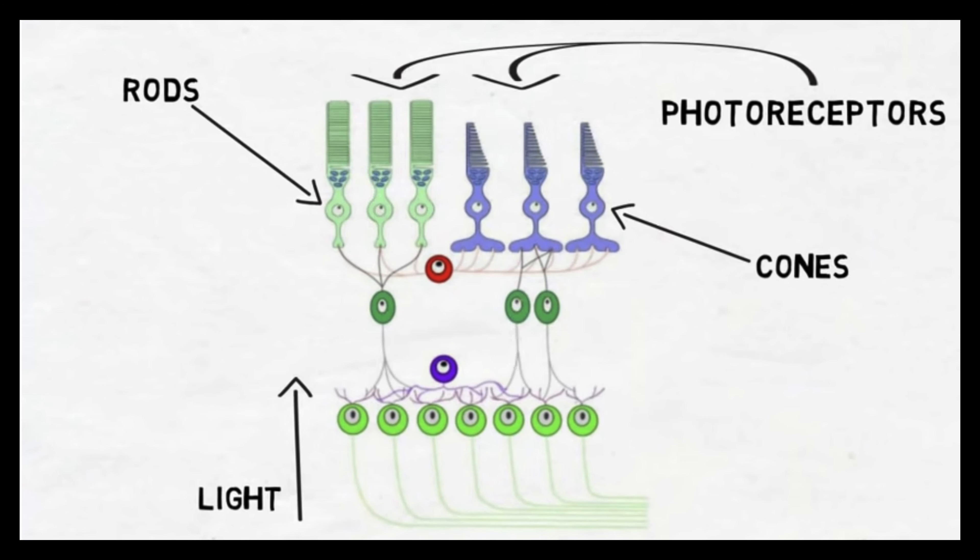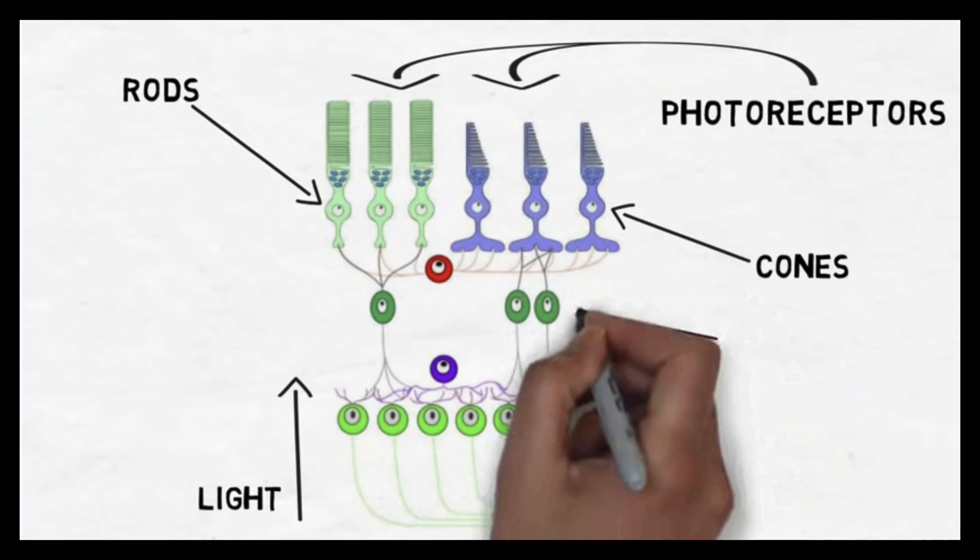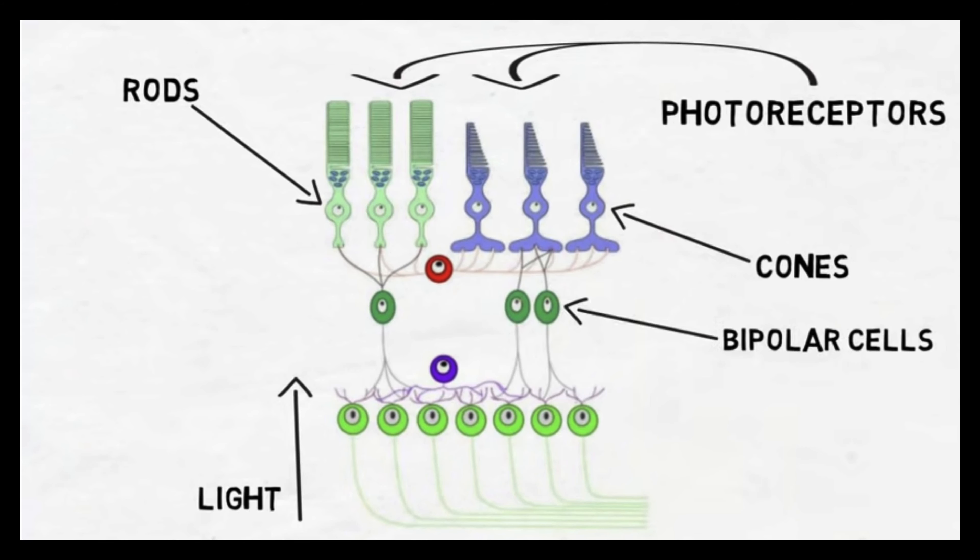When light hits photoreceptors, it interacts with a molecule called photopigment, which begins a chain of events that serves to propagate the visual signal. The signal is transmitted to cells called bipolar cells, which connect photoreceptors to ganglion cells.